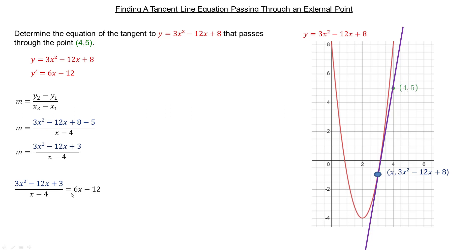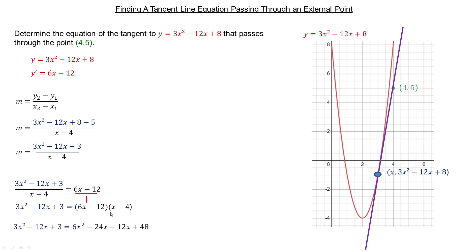To solve for x, I'm going to think of 6x minus 12 as (6x − 12) over 1 and cross-multiply. So 3x² minus 12x plus 3 times 1 equals the product of (x − 4) and (6x − 12). Expanding the right side: 6x times x is 6x², 6x times negative 4 is negative 24x, negative 12 times x is negative 12x, and negative 12 times negative 4 is positive 48.